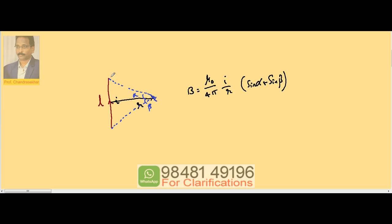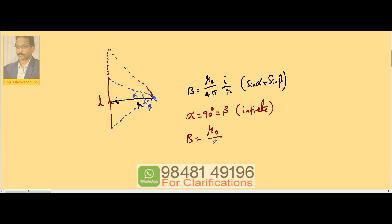Notice that the length L of the conductor is not present in the equation. Suppose we imagine the conductor is infinitely long and extend it — automatically alpha increases, and the maximum value for alpha is 90°, same for beta. Substituting alpha and beta as 90°, B becomes μ₀/4π × I/R × 2, which equals μ₀/2π × I/R. This is the induction due to an infinitely long conductor, consistent with what we considered earlier.